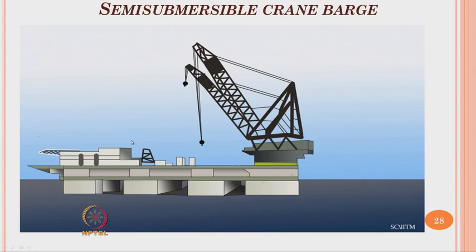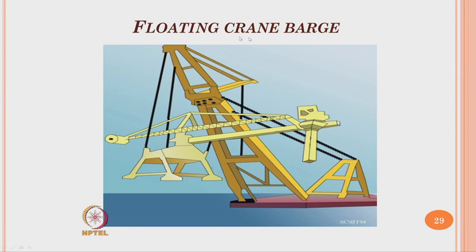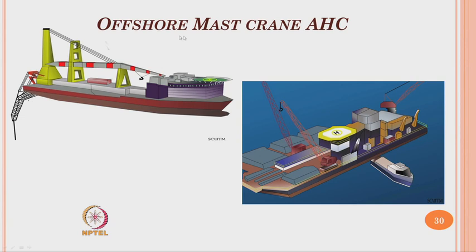The photograph shown is a semi-submersible crane barge, used for uploading or transferring oil from one vessel to another or to a shuttle tanker — it floats and can be moved from location to location. The offshore mast crane AHC is a typical example of a very large floating vessel with different capacity, boom length, and crane hook capacities used in offshore production systems.